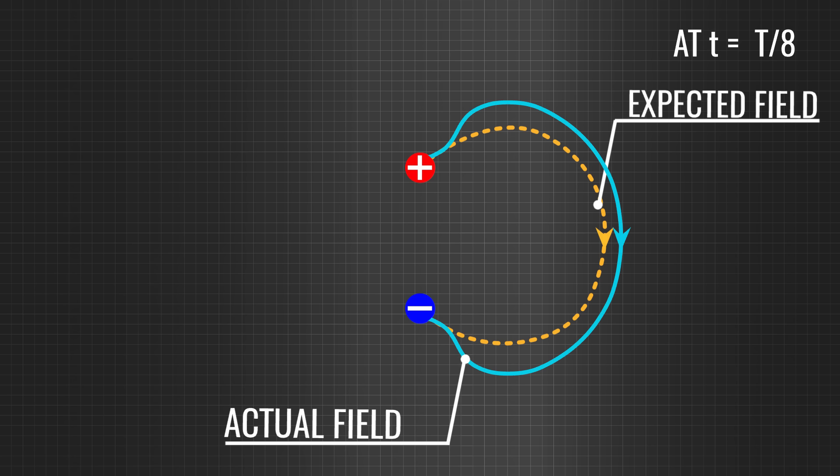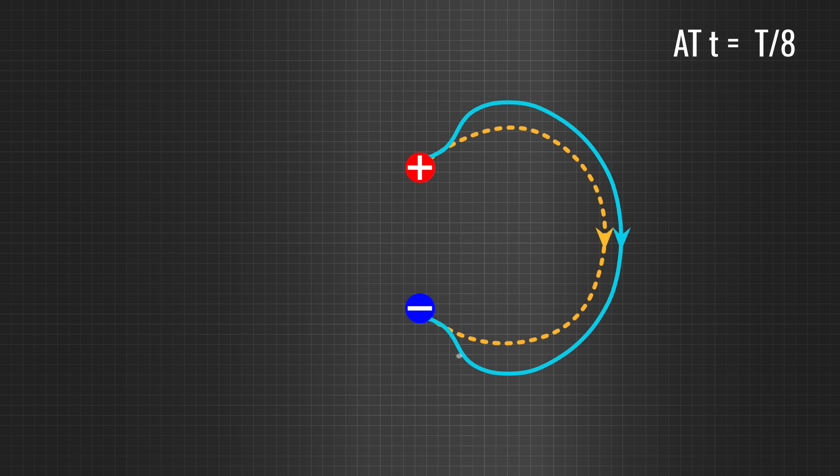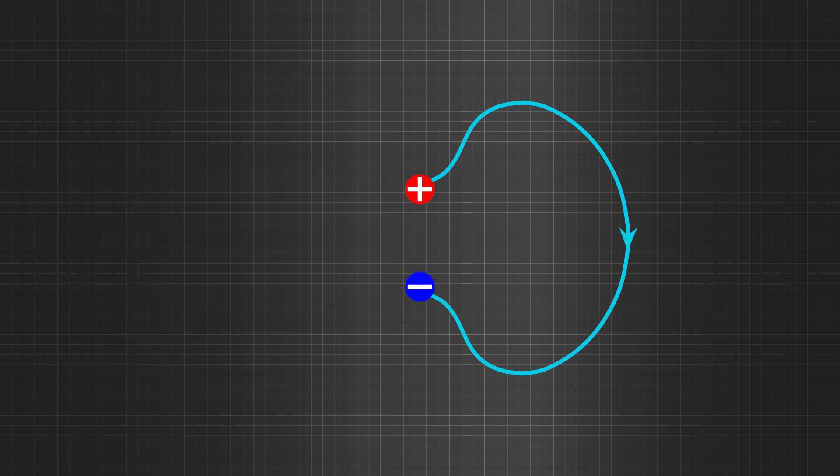As we saw earlier, accelerating or decelerating charges cause kinks in the electric field. In short, the old electric field does not get adjusted to the new field very well. This deformation is continuous since there is continuous acceleration in the charge.